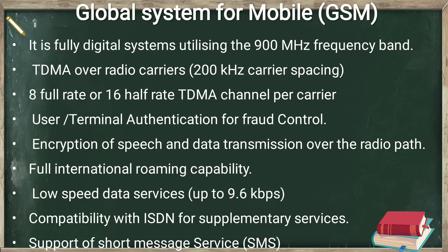In previous sessions we discussed the advantages and different digital cellular standards available worldwide, and how these standards are based on different multiple access systems. In today's lecture we discuss one of those standards, GSM — Global System for Mobile. It is a fully digital system utilizing the 900 MHz frequency band, based on TDMA with radio carriers of 200 KHz carrier spacing, supporting 8 full rate or 16 half rate TDMA channels per carrier. User terminal authentication for fraud control is one of the major security advantages in GSM.